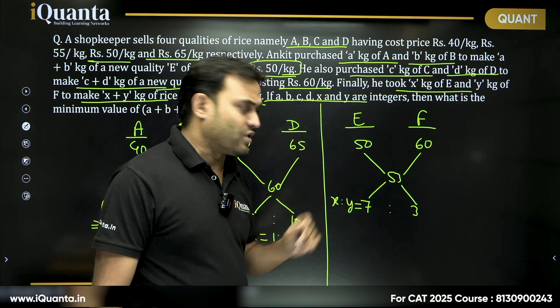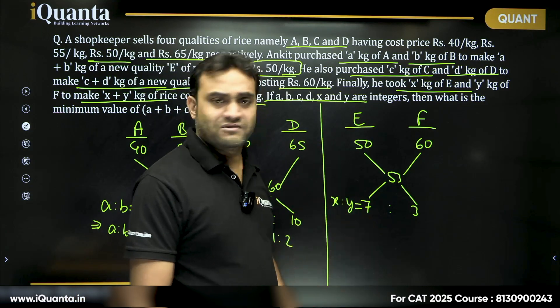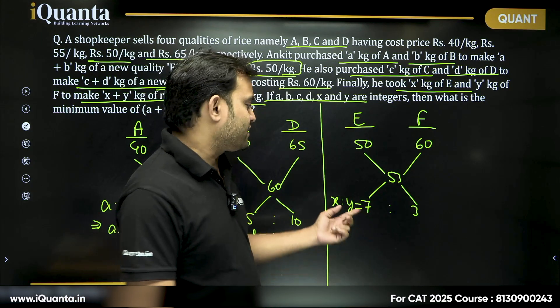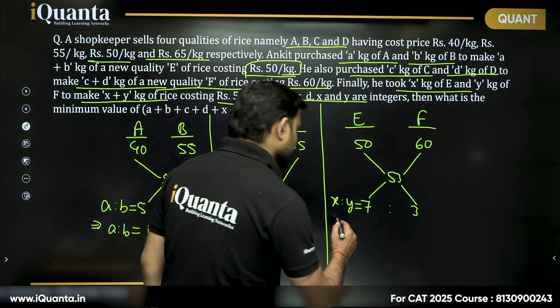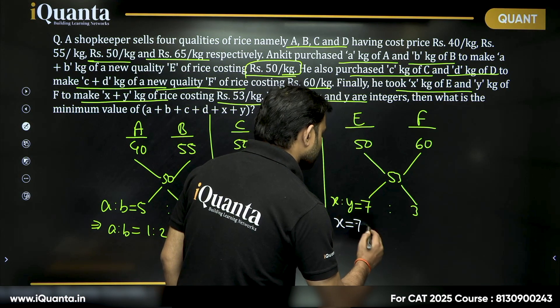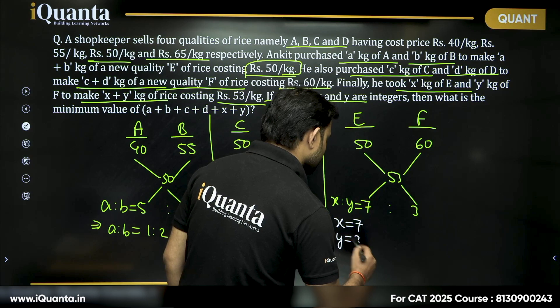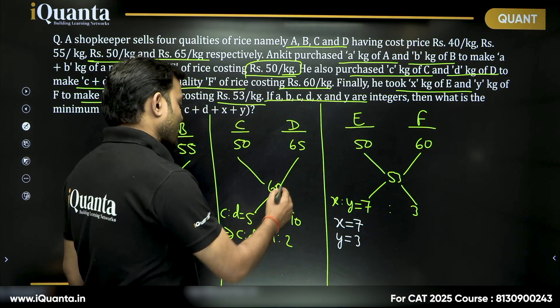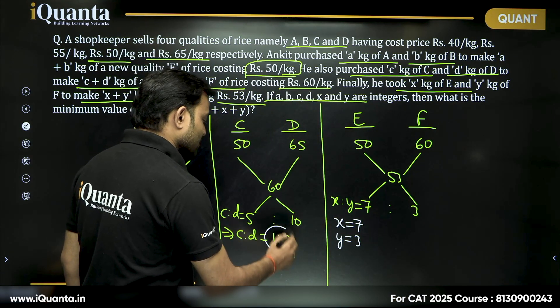Now, what do we want? That x is to y is 7 is to 3. The minimum value of x we can take is 7. The minimum value of y that we can take is 3. Now, this is y, right? Taking these two together, we are making y.